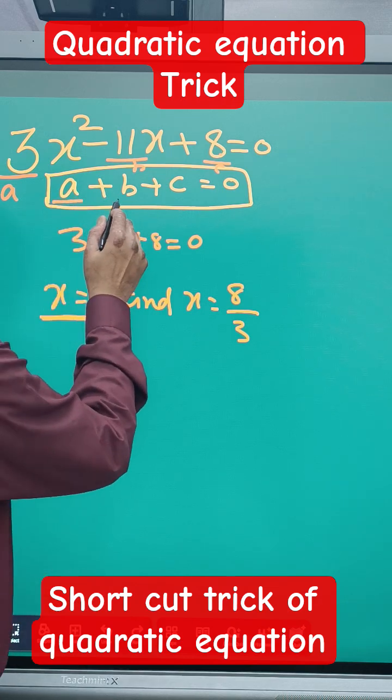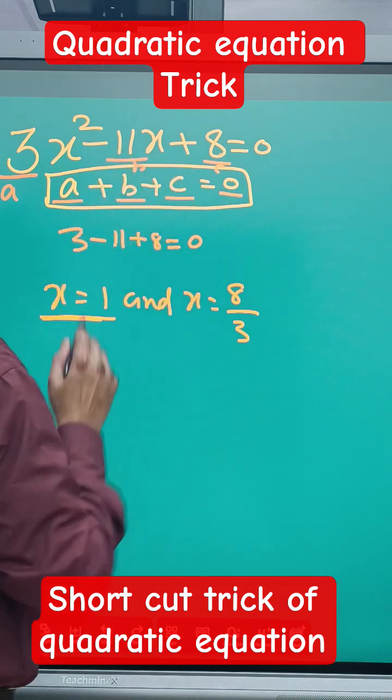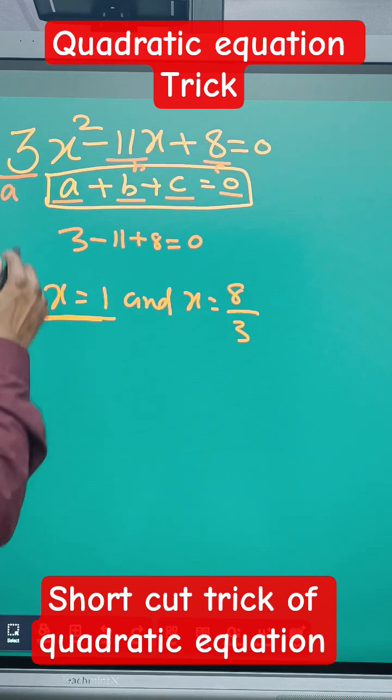The rule is: whenever a + b + c = 0, we can see the answer as c over a.